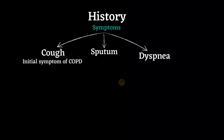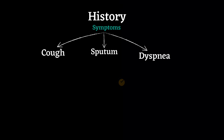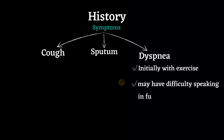It is frequently a morning cough but becomes constant as the disease progresses. The second symptom is dyspnea, which is initially on exertion but may progress to shortness of breath even at rest. Sometimes patients may have difficulty speaking in full sentences.